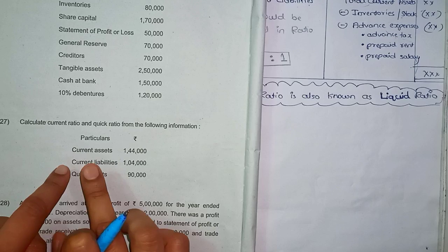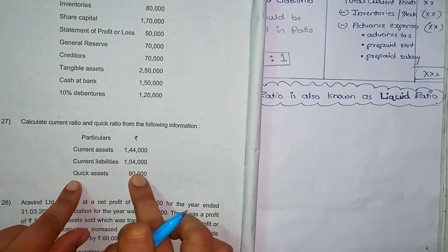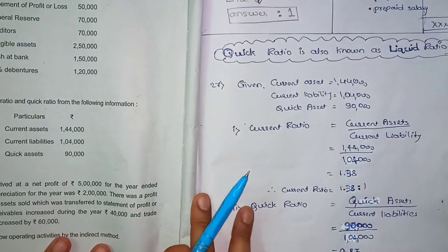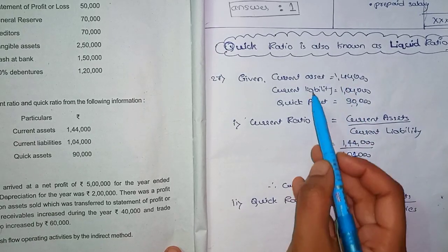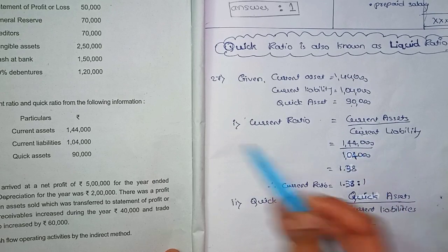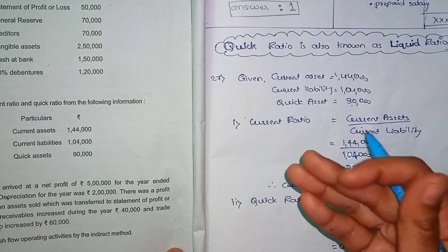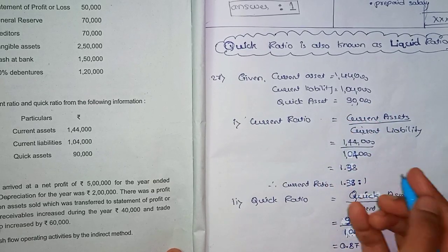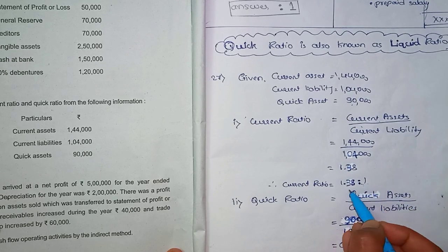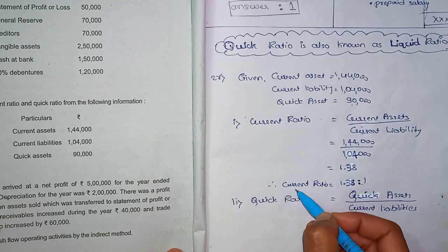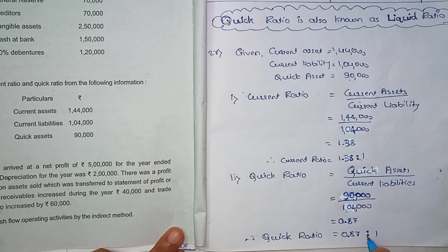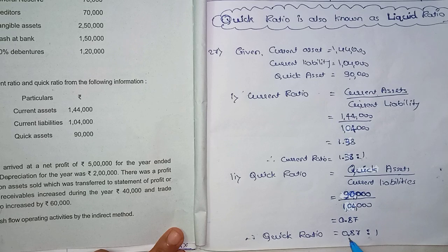Calculate current ratio and quick ratio from the following information — this is from the May 2022 paper. Current ratio equals current assets divided by current liabilities: 1,44,000 divided by 1,04,000 equals 1.38, so current ratio is 1.38 : 1. Quick ratio equals quick assets divided by current liabilities: 90,000 divided by 1,04,000 equals 0.87, so quick ratio is 0.87 : 1.